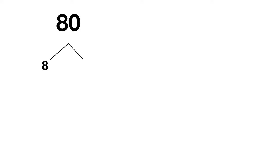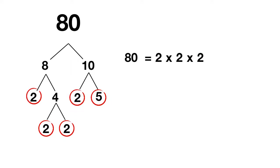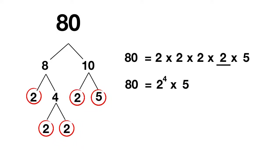Here's your last one for today. Write the prime factors of 80 using exponents. You can start by splitting 80 into 8 times 10. Then 8 can be split into 2 times 4 — 2 is prime, but 4 can be split into 2 times 2, both prime. 10 can be split into 2 times 5, both prime. So 80 is equal to 2 times 2 times 2 times 2 times 5. Using exponents, 2 is being multiplied once, twice, 3 times, 4 times — so 2 to the power of 4, times 5.